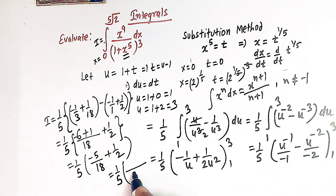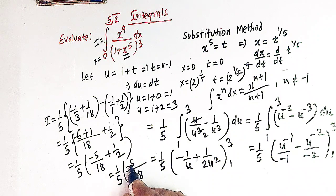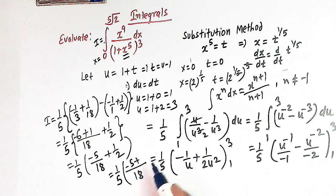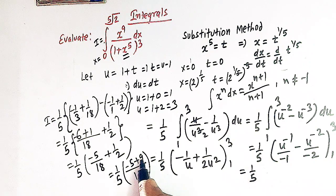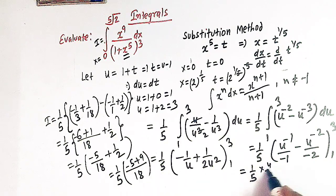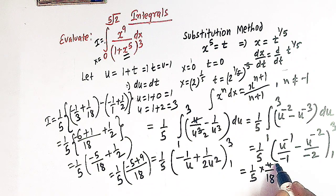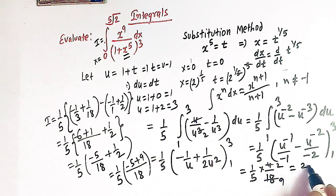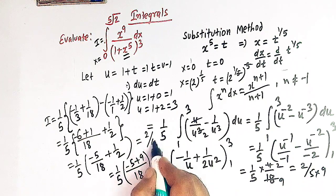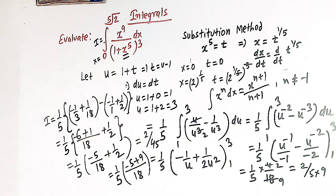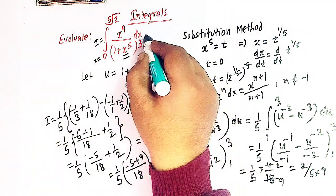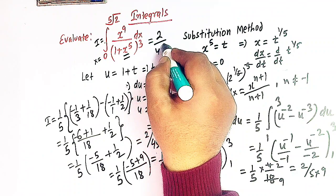Taking the LCM as 18 we have minus 5 plus 2 times 9 equals minus 5 plus 9 equals 4 over 18. Multiplying by 1 over 5 gives 1 over 5 times 4 over 18, which simplifies to 4 over 90, and 4 over 90 reduces to 2 over 45. So the value of this integral is equal to 2 over 45.